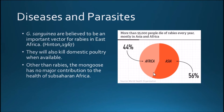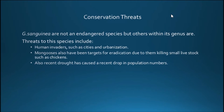Other than rabies, the mongoose has no major constant contribution to the health of sub-Saharan Africa. This diagram shows proportions of rabies mostly in Asia and Africa. As for conservation threats, they are not an endangered species, but others within this genus are. Threats include human encroachment such as cities and urbanization.